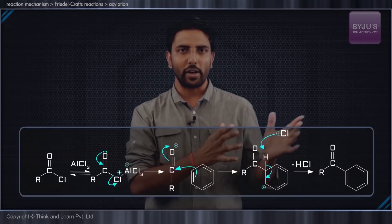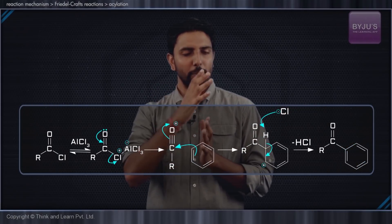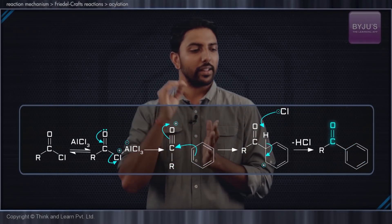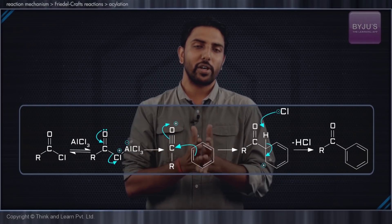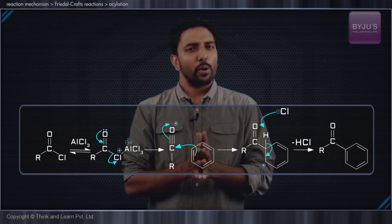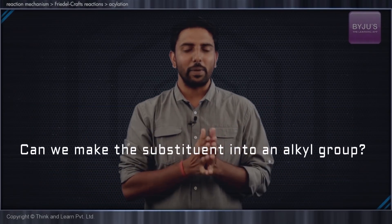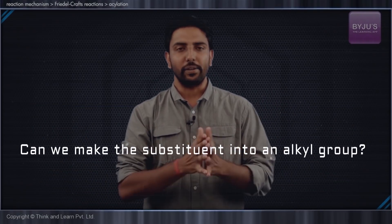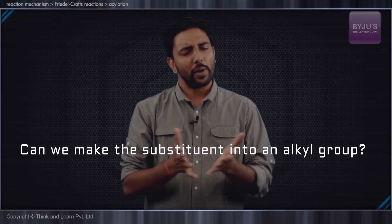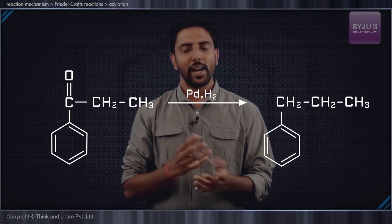Looking at the products, we have the benzene ring with a single bond to a carbonyl group, and the carbon on the other side is bonded to an alkyl group. Now, can we move from this acylated benzene ring into an alkane? Very well — there is something called a reduction reaction. You take the acylated product, you reduce it, and you get the alkane.